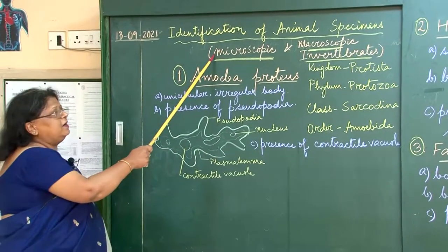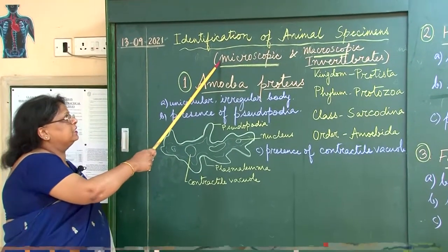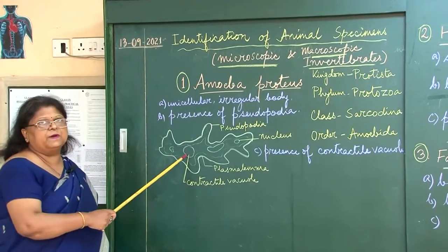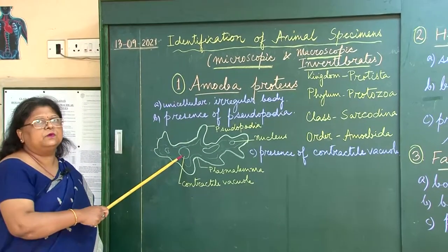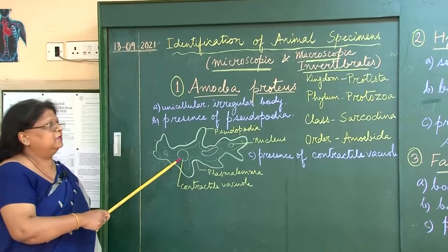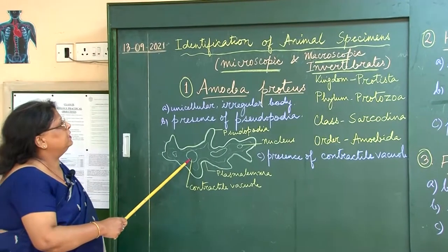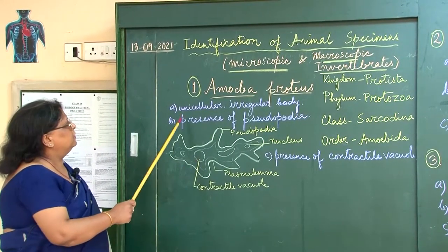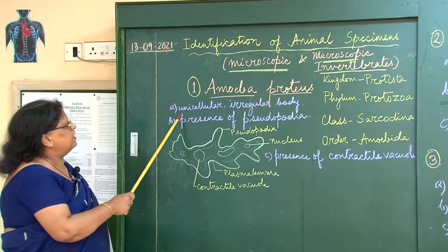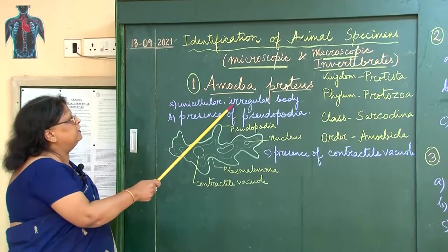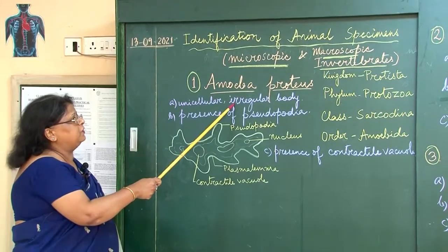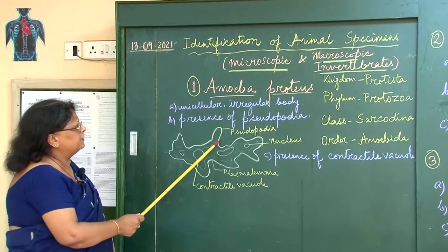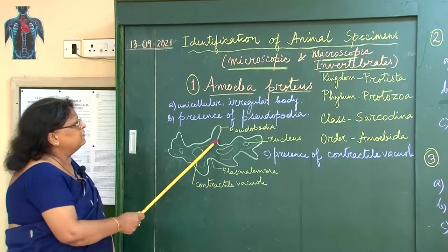We can see them under high power of a microscope on the slides. To study about them, I have drawn them on the board. They are unicellular, they have an irregular shaped body and a locomotory organ which is not fixed.